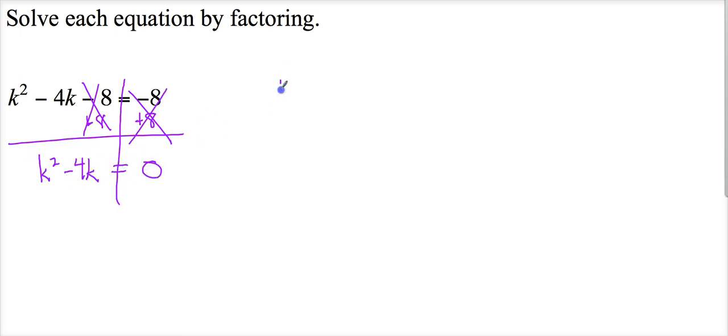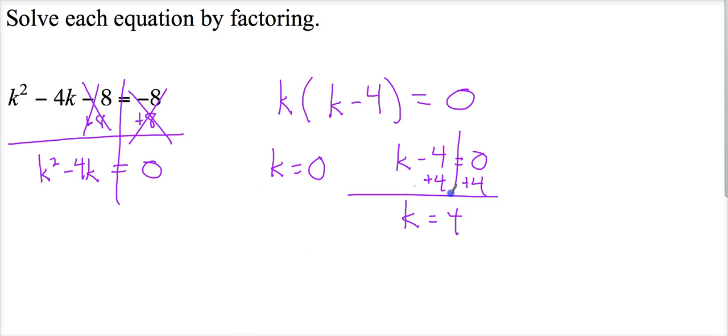So what can I do with this? Well, I can factor out a k, that's one thing I can do. If nothing else I can do that and then set these equal to zero. So k equals zero, and k minus 4 equals zero, so add 4 and get k equals 4. So there are my two solutions.